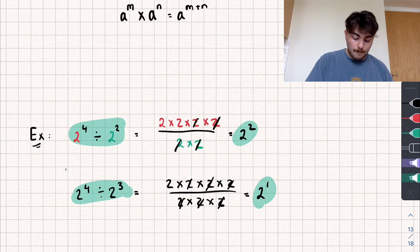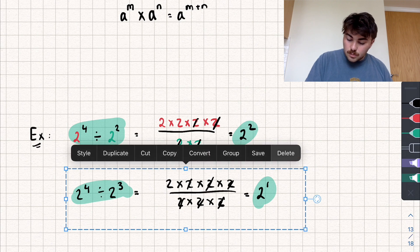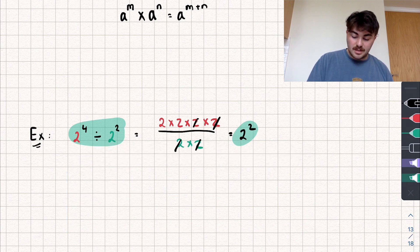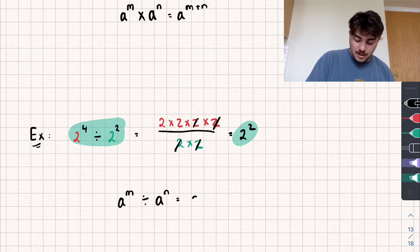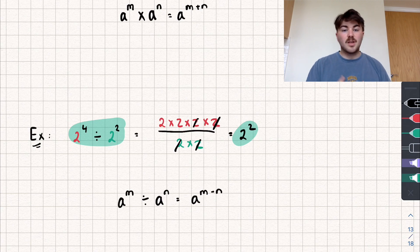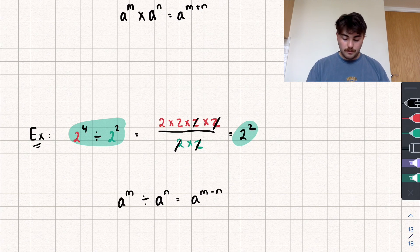This gives us our second law of indices: if we have a to the power of m divided by a to the power of n, that equals a to the power of m minus n. Again, the base must be the same.